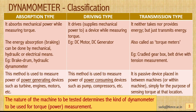Based on the way power is handled, there are three kinds of dynamometer classifications: absorption type dynamometers, driving type dynamometers, and transmission type dynamometers. Absorption type dynamometers are devices which will absorb mechanical power while measuring torque.